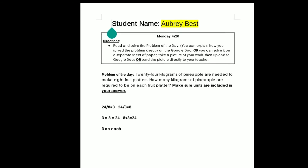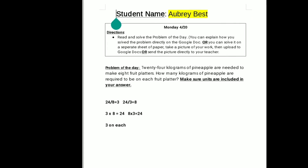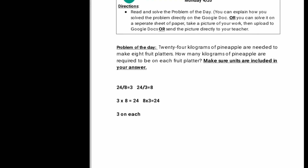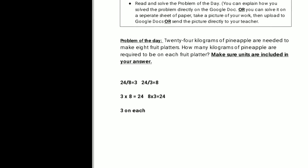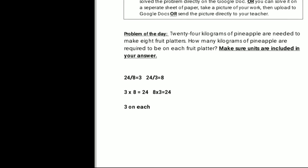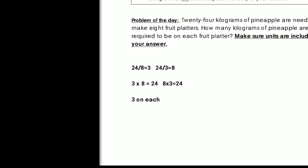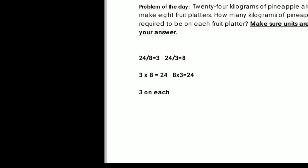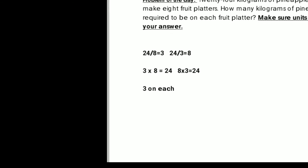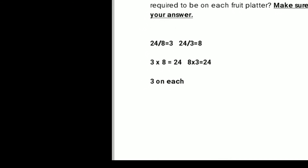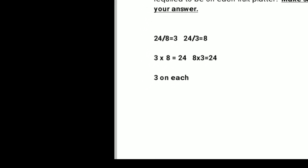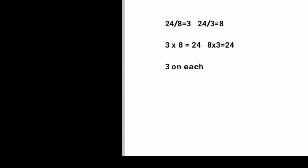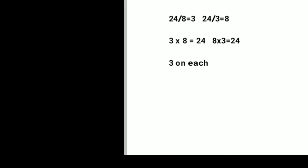Now let's look at Aubrey Best. Aubrey Best decided to write out and type in his equation. He had 24 divided by 8 equals 3. And then he did all the fact families, including multiplication, because he knew that 3 times 8 is equal to 24. And 3 was his answer. Way to go, Aubrey Best.